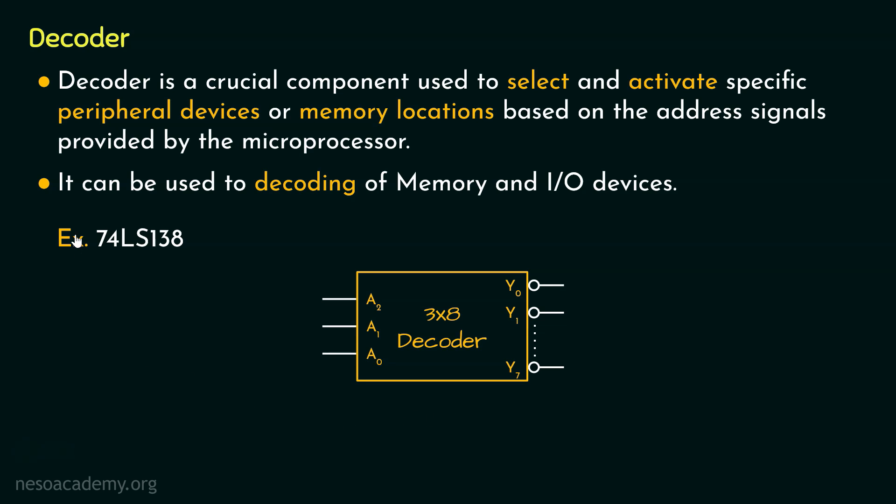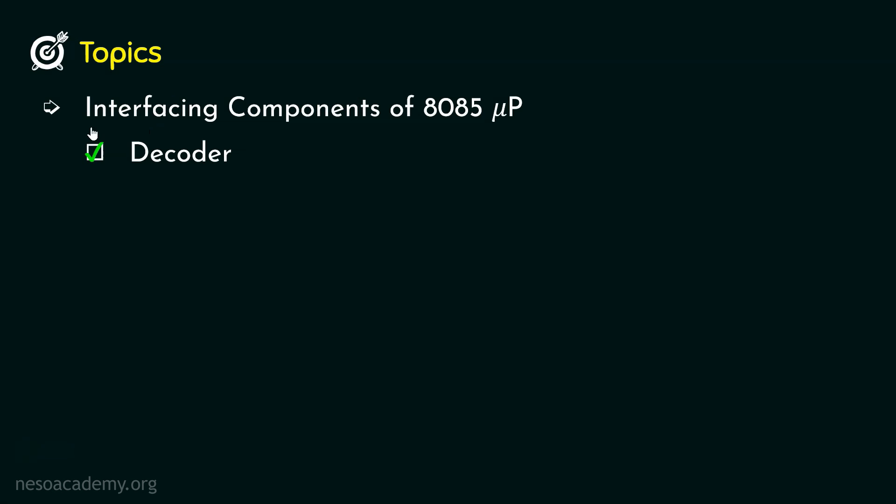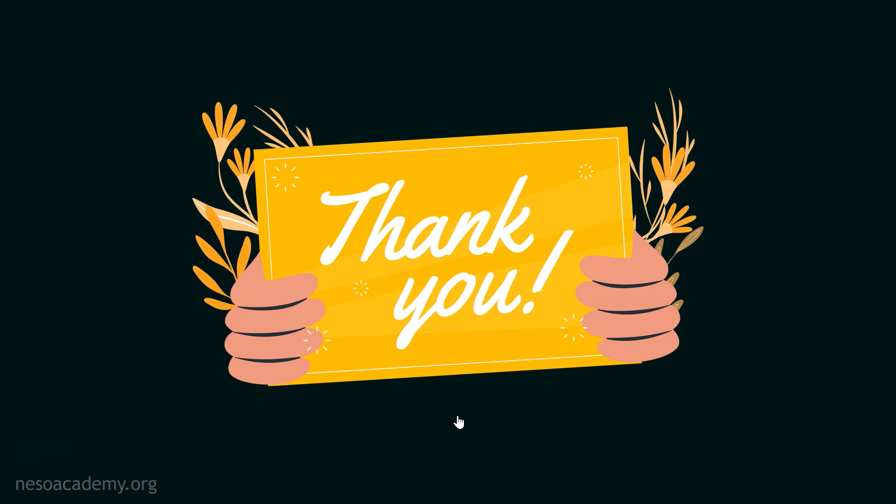So that is all about the interfacing component decoder. So in this session, from all the different interfacing components of 8085 microprocessor, we learnt about the last one, that is the decoder. Alright people, that will be all for this session. With this, we have come to an end of the theoretical portion of this chapter. In the upcoming sessions, we are going to solve some numerical problems based on memory and 8085 microprocessor. Hope to see you in the next one. Thank you all for watching.